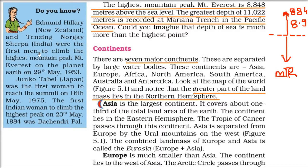Edmund Hillary of New Zealand and Tenzing Norgay Sherpa of India were the first men to climb Mount Everest on 29th May 1953. Junko Tabei of Japan was the first woman to conquer the summit on 16th May 1975. Bachendri Pal was the first Indian woman to reach that peak on 23rd May 1984.